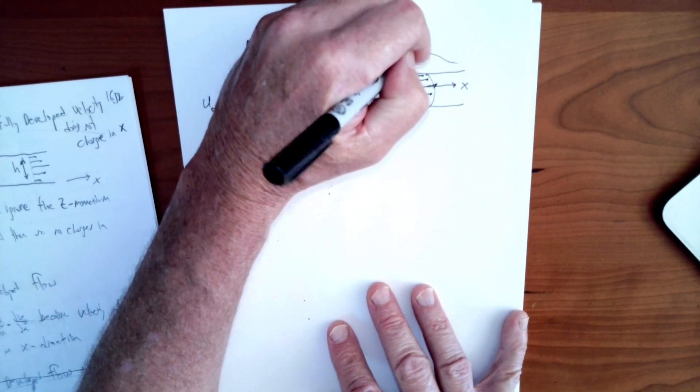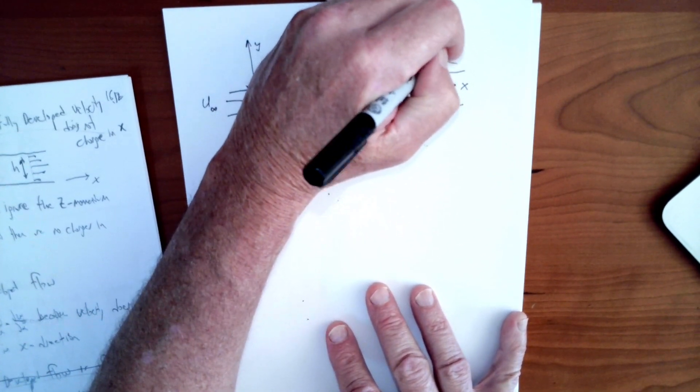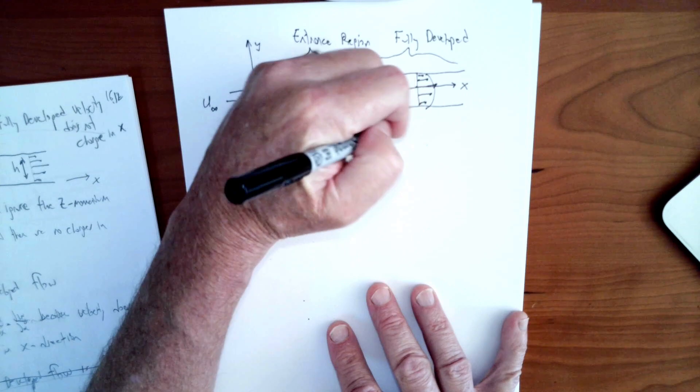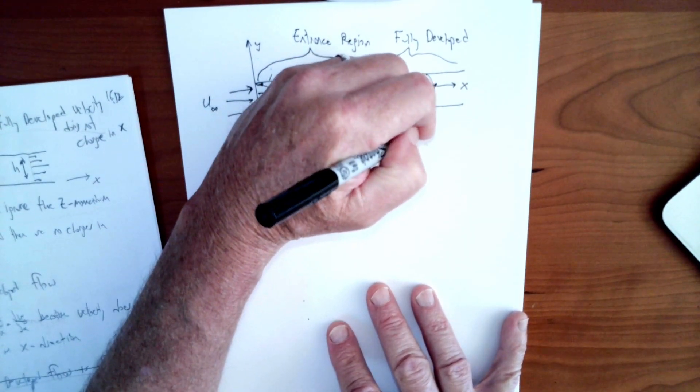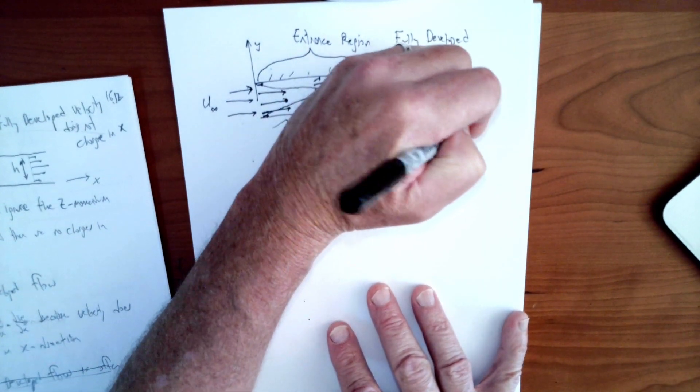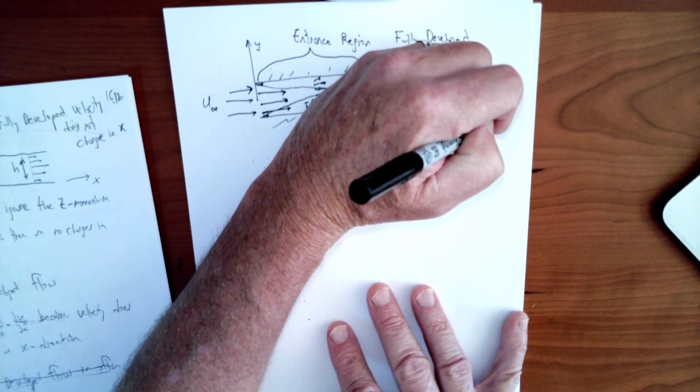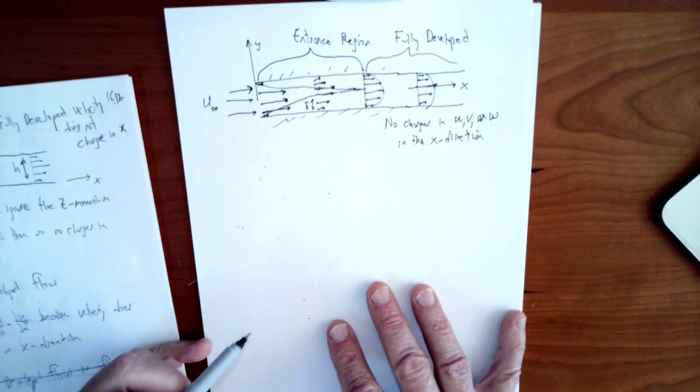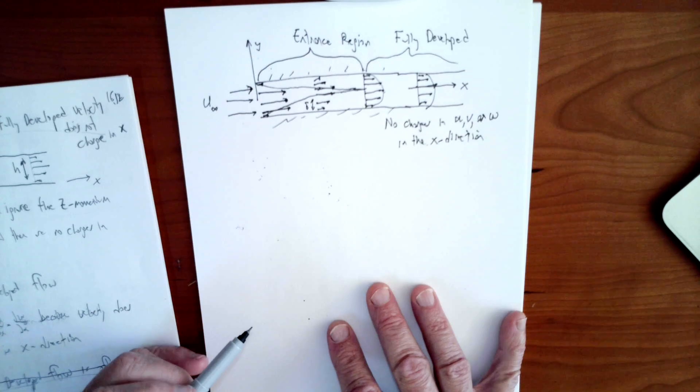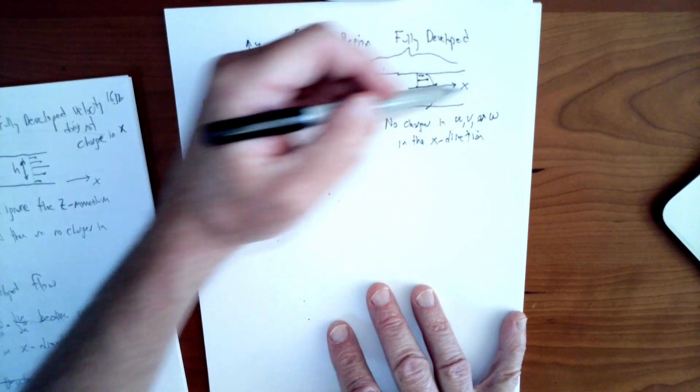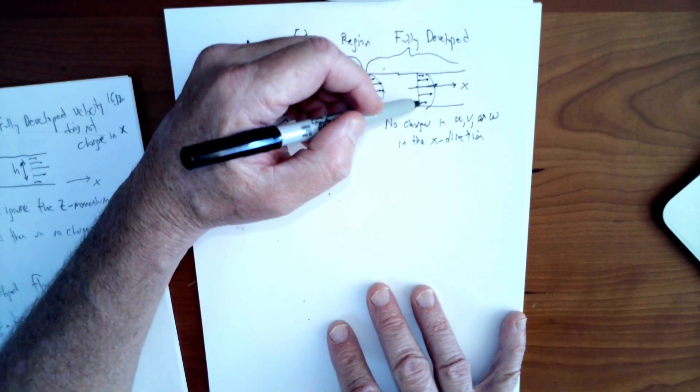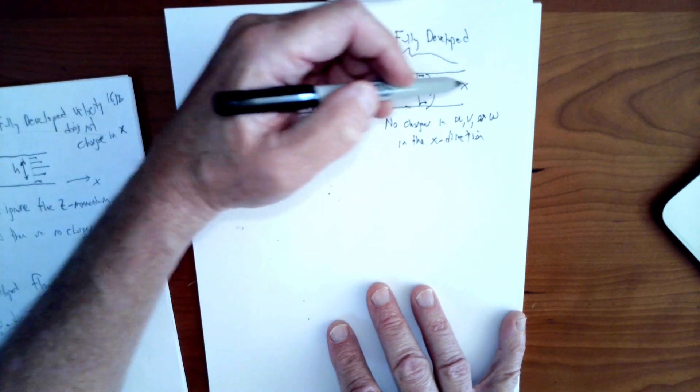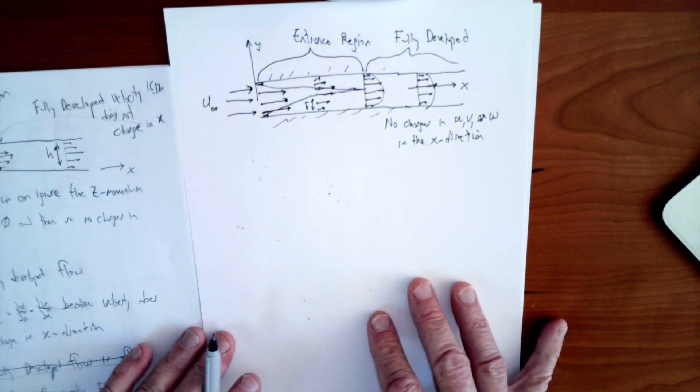The velocity in the x direction is no longer going to change. So no changes in u, v, or w in the x direction. The velocity obviously is changing as you go from the wall to the center of the flow. That's the y direction. There are changes there. But there is no longer any change for velocity when you look in the x direction.